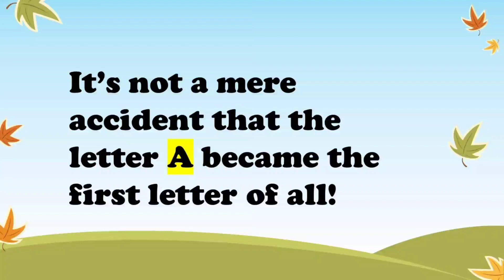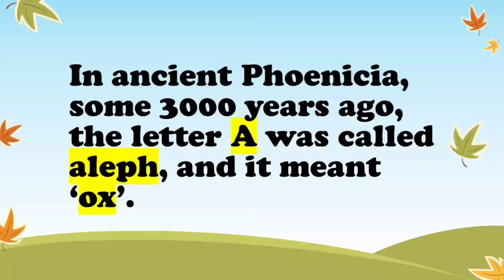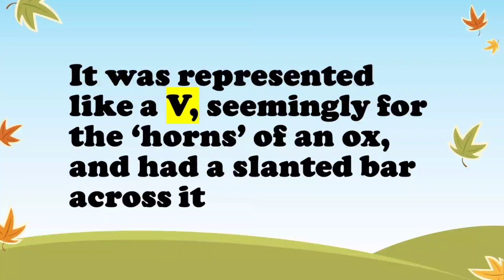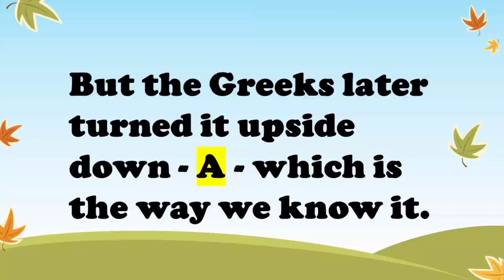It says that it is not a mere accident that the letter A became the first letter of all. In ancient Phoenicia, some 3,000 years ago, the letter A was called Aleph, and it meant ox. Since A was called Aleph and Aleph meant an ox, it was represented like a V, seemingly for the horns of an ox, and had a slanted bar across it. But the Greeks later turned it upside down, which is the way we know it and write it now.